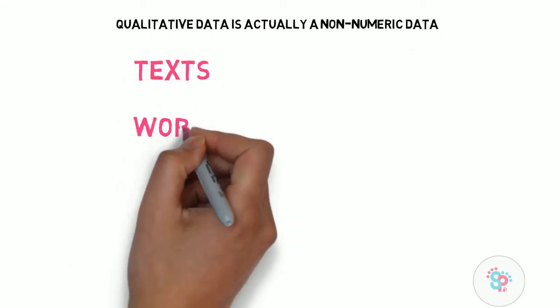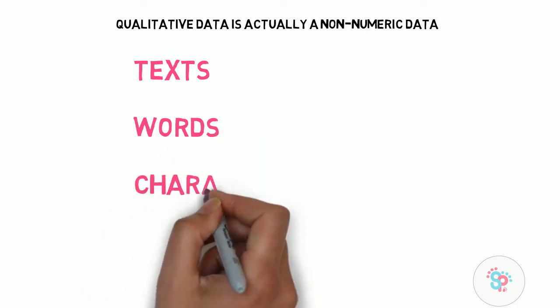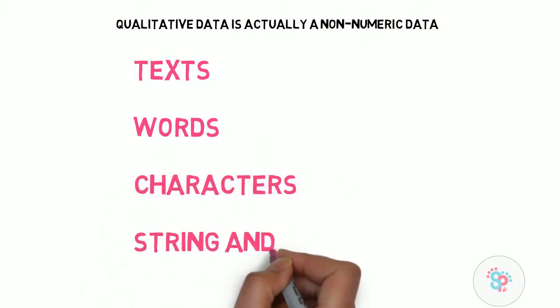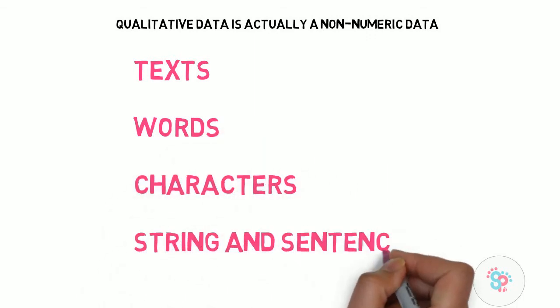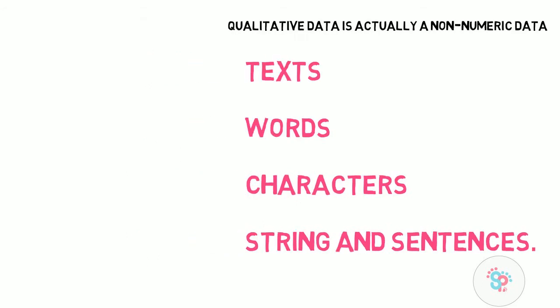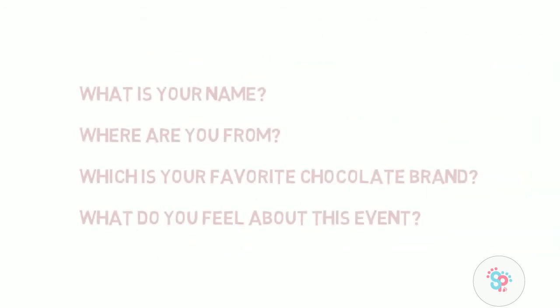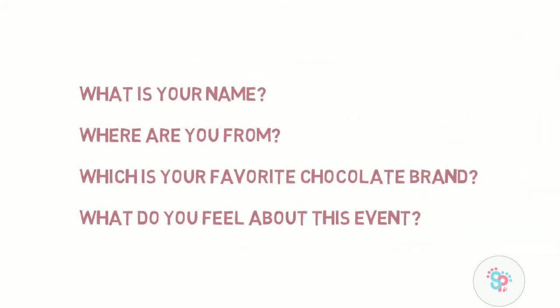The data in qualitative form will usually be in the form of text, words, characters, strings, and sentences. For example, have a look at these questions: What is your name? Where are you from? Which is your favorite chocolate brand? What do you feel about this event?